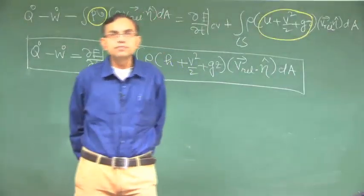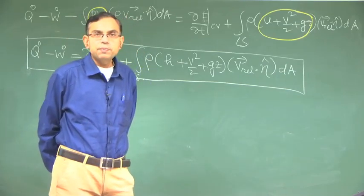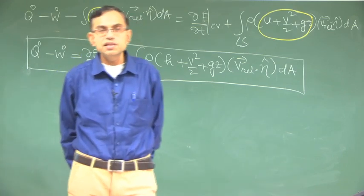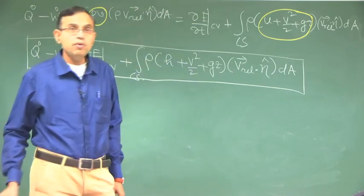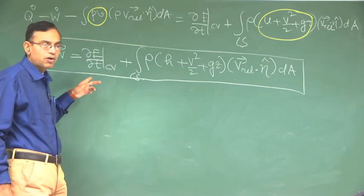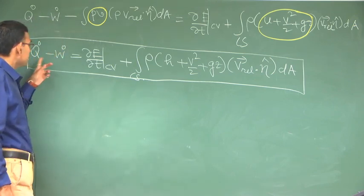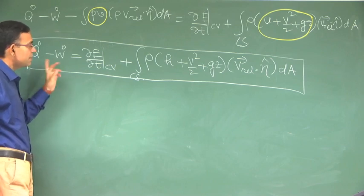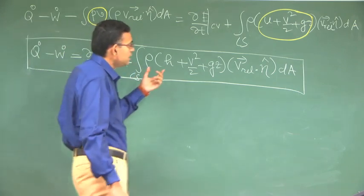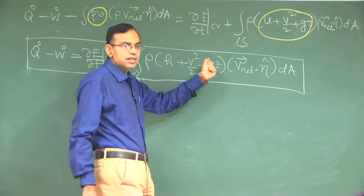In the previous lecture, we were discussing about writing an expression for the first law of thermodynamics for a flow process taking place across a control volume. This is the final expression that we arrived at before we called it a day. This is the rate of heat transfer, rate of work done, this is the rate of change with respect to the control volume, and this is the outflow minus inflow term.